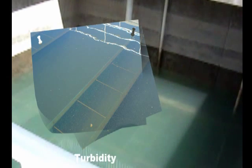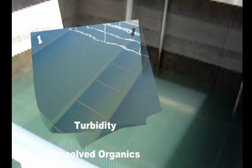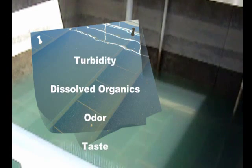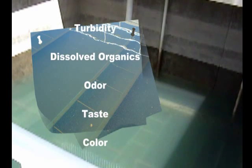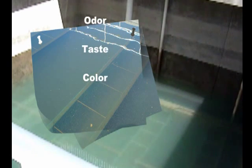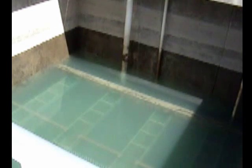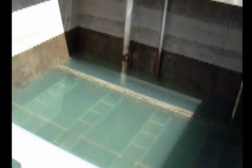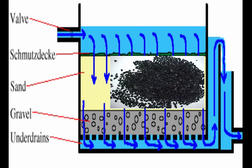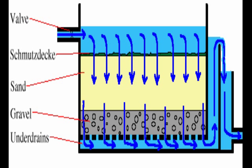Filtration is a water treatment step used to remove turbidity, dissolved organics, odor, taste, and color. The water flows by gravity through large filters of anthracite coal, silica sand, garnet, and gravel. The float particles are removed in these filters. The rate of filtration can be adjusted to meet water consumption needs.